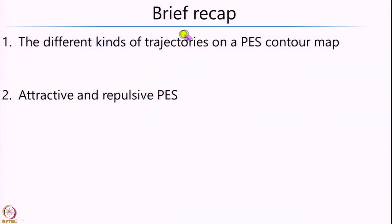Before we get into today's lecture, let us just recap what we learnt about the H3 system, and then we will look at a couple more different kinds of systems. In the previous lectures we have been looking at potential energy surfaces of the H3 system, different kinds of trajectories on the potential energy contour maps, and what are called attractive and repulsive potential energy surfaces.